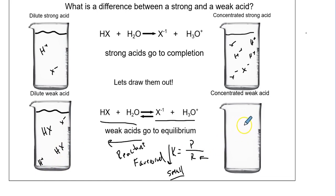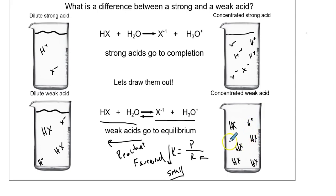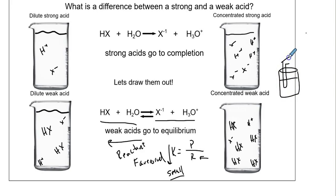For a concentrated weak acid, you'd have H+, HX, HX, HX, HX. I'd probably leave it like this, but if you feel the need, you could show one H+ and maybe one X-. Keep in mind, when you take a beaker or drink something vinegary, or you stick your finger in some acid - what's causing this to burn your finger?